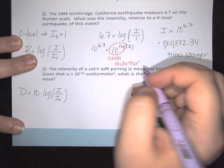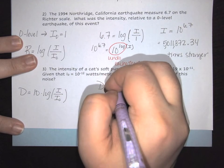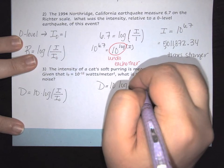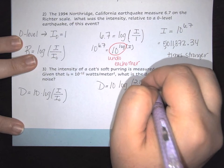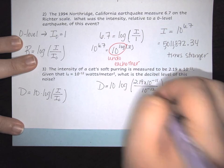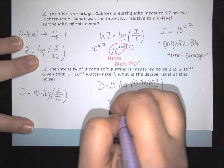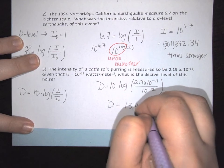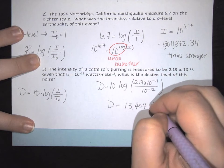To find the decibel level, we have 10 times the log of 2.19 times 10 to the negative 11 over 10 to the negative 12. This gives us 13.404 decibels.